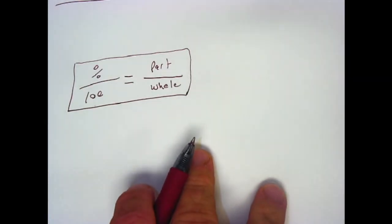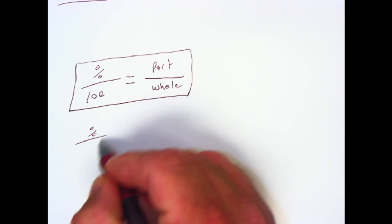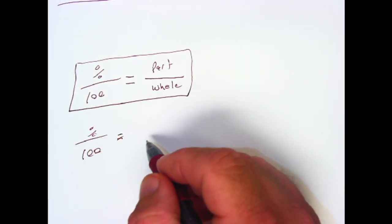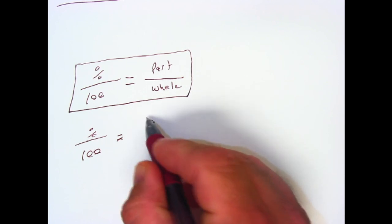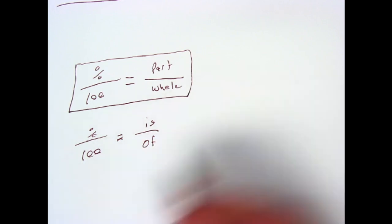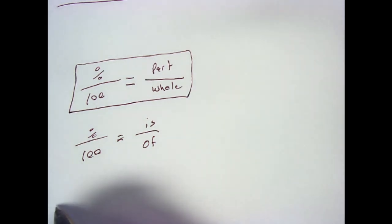A better way that people have learned to do this is to look at it as percent over 100 is over of. And let's see how that works.